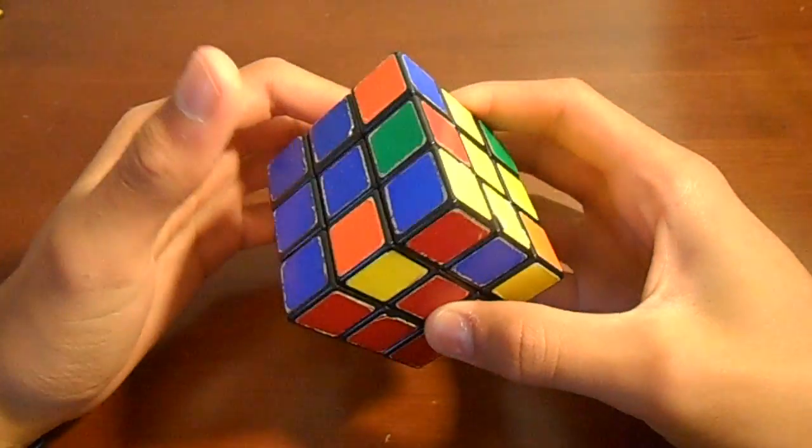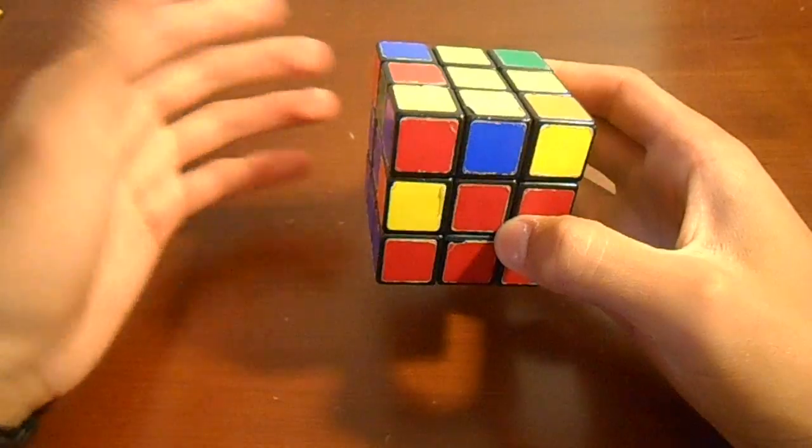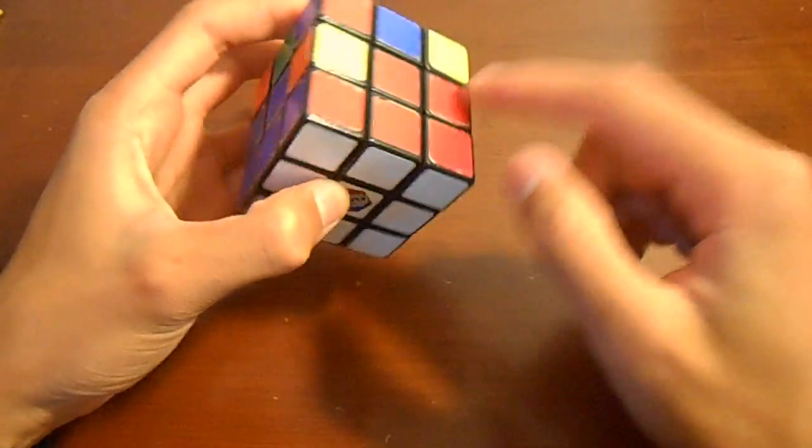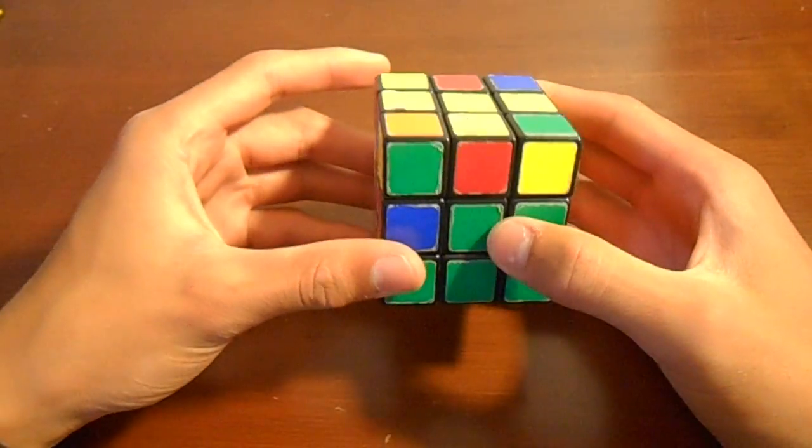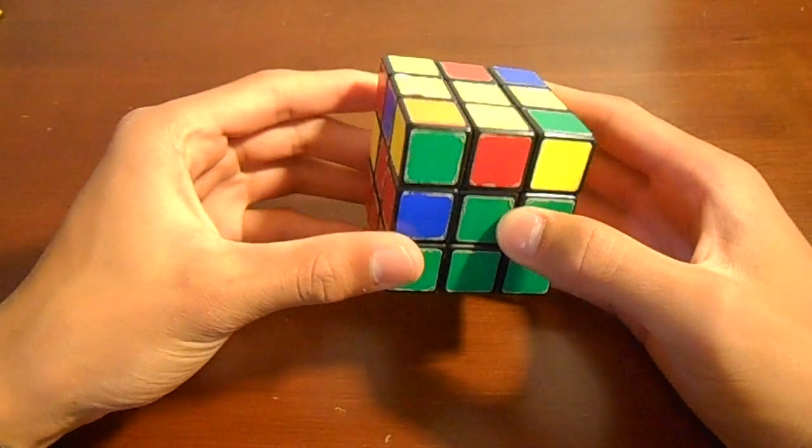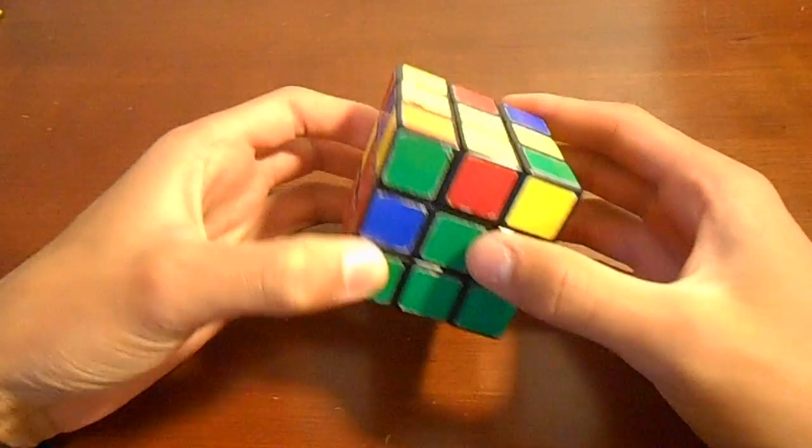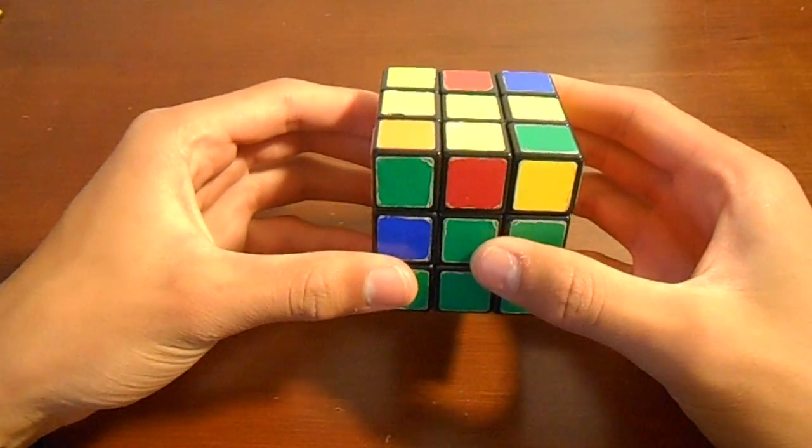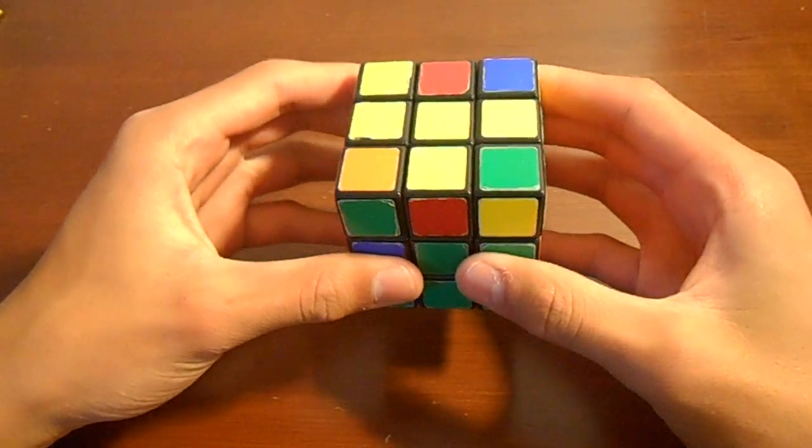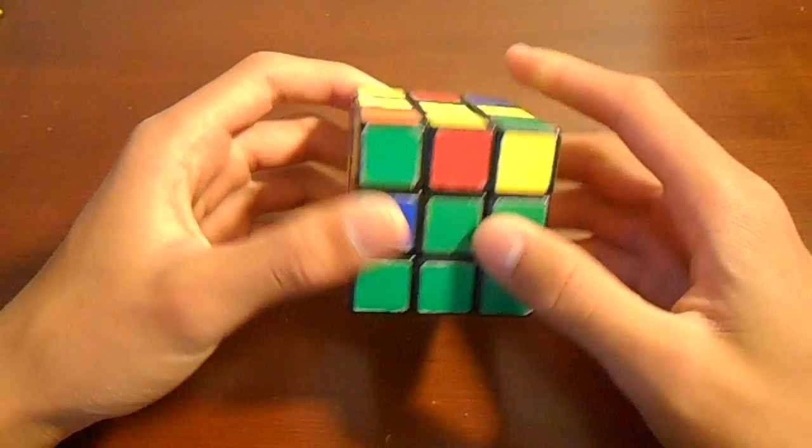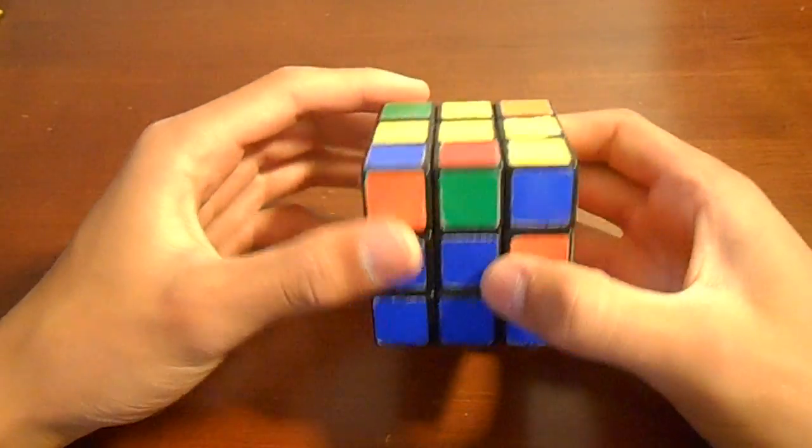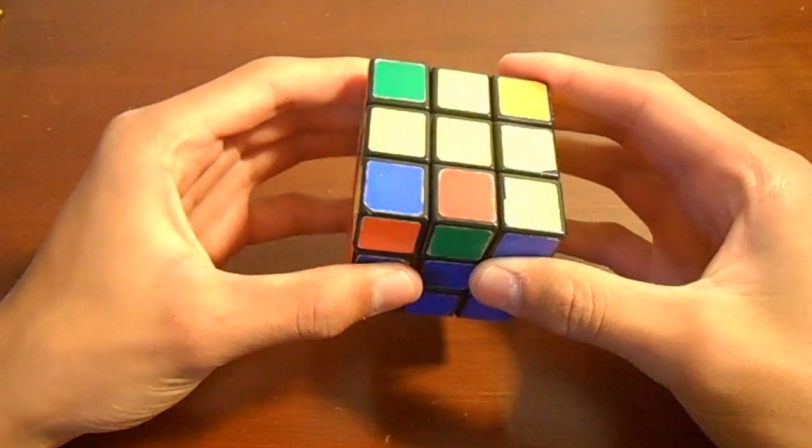So, that's the only really special case for inserting edges in the second layer. And that pretty much covers all of it. So, hopefully, you can learn how to do this step. And make sure you practice this before going on to the next step. And the next step is going to be solving the yellow cross. So, congratulations on completing the first two layers. And thank you for watching.